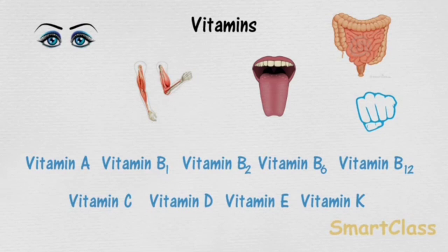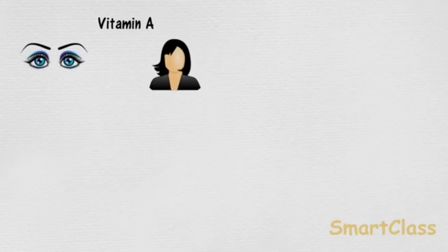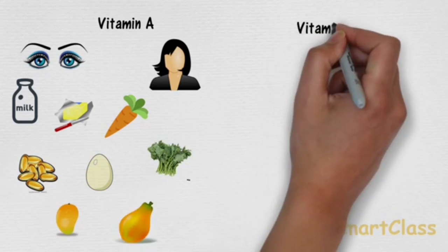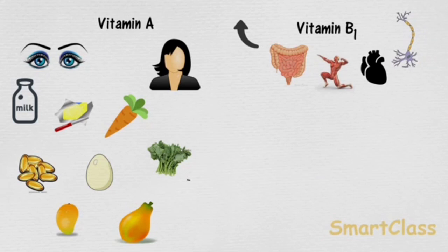Vitamin A keeps our skin and eyes healthy. Foods such as carrot, egg, and milk are rich in vitamin A. Vitamin B1 provides energy. Foods such as milk, egg, and potato are rich in vitamin B1.